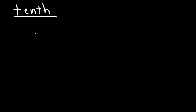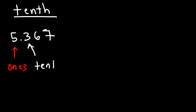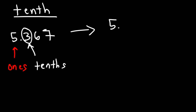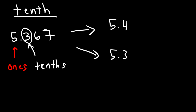Now let's talk about how to round to the nearest tenth. So let's say we have the number 5.367 — round it to the nearest tenth. We know this is the ones digit, and this here is the tenths digit, and this is the hundredths digit. So we're going to round to the tenths digit — either that's going to go up to 5.4 or down to 5.3. Looking at the next number, which is a six — that's in the category of five or more, so we need to round it up to 5.4.